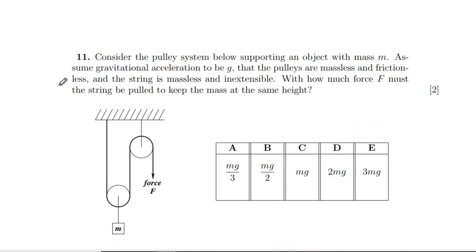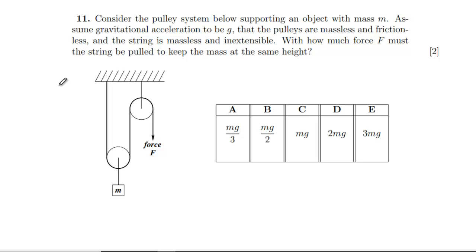Question 11: a pulley system supports an object of mass m. Pulleys are massless and frictionless, string is massless and inextensible. Pulling the string with force F results in two segments of string each contributing F upward, so for equilibrium: 2F = mg, giving F = mg/2.